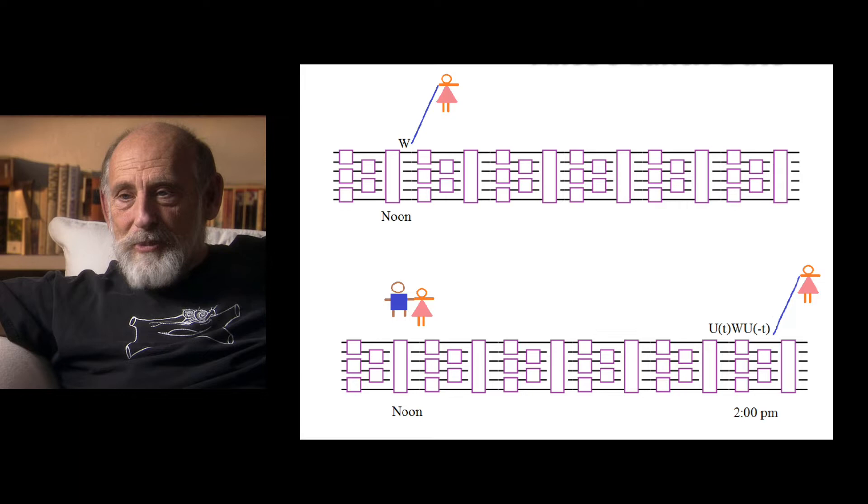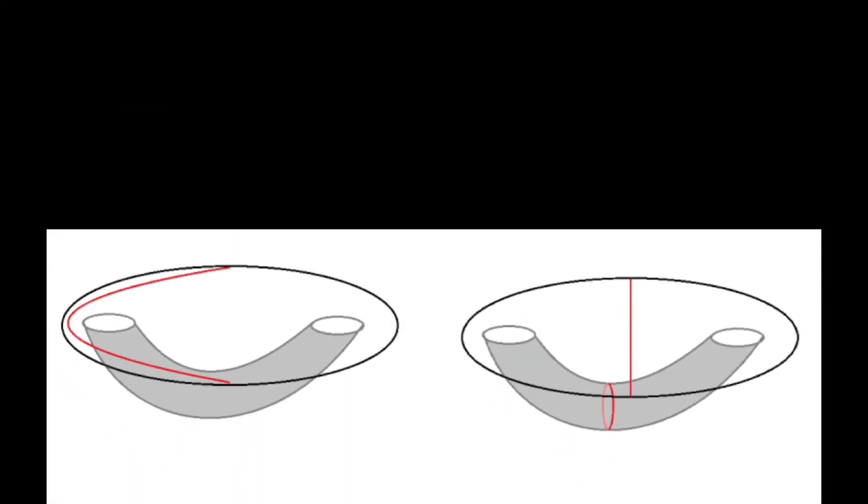Complexity theory is usually thought of as trying to classify or quantify how difficult a problem is, how difficult is it to solve a problem, or how difficult is it to get from A to B, whatever A and B are. How hard is it, how many steps do you have to take, what's the minimum number of steps that you have to take to get from A to B. That's what complexity theory is about. Complexity is not usually thought of as a physical property of a system.